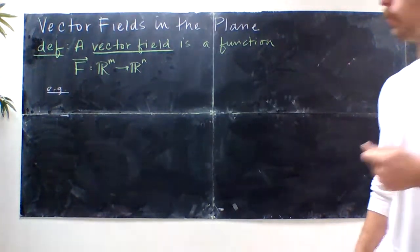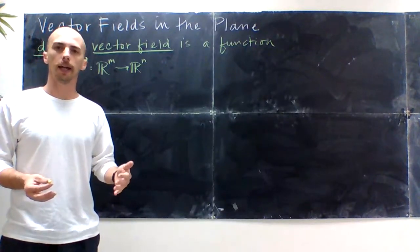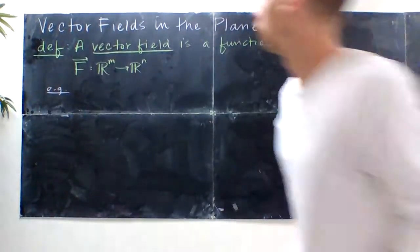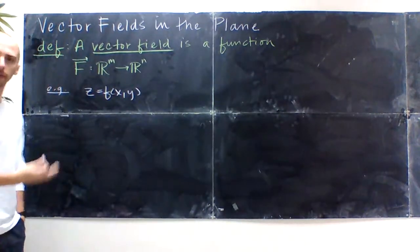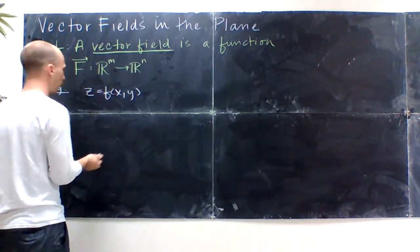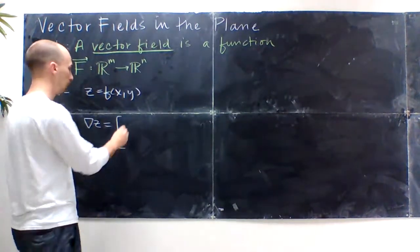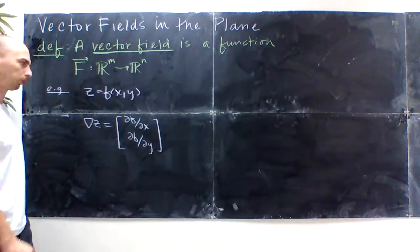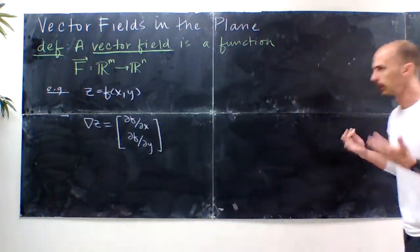Also the gradient — we've talked about the gradient of a function in this class. For a function z = f(x, y) — a real valued function that takes in two inputs but gives back one number — the gradient of z equals the partial of f with respect to x and the partial of f with respect to y. Both of those partials can be functions of x and y, so it really is a function that takes in x's and y's and gives you back a vector. That makes it a vector field.